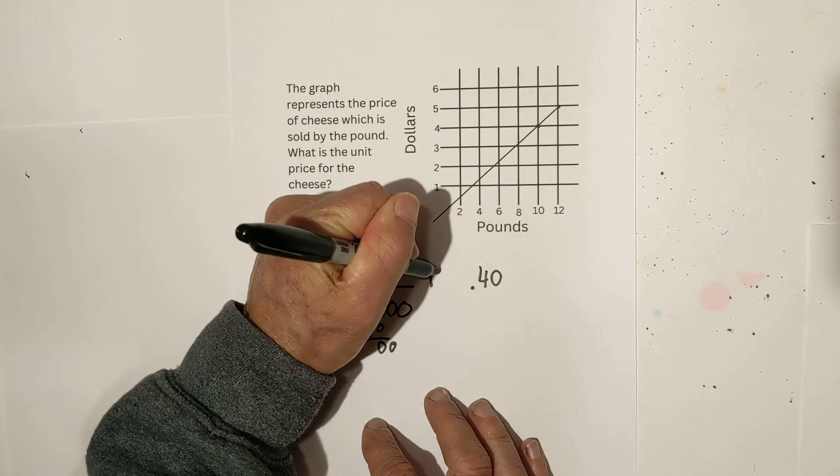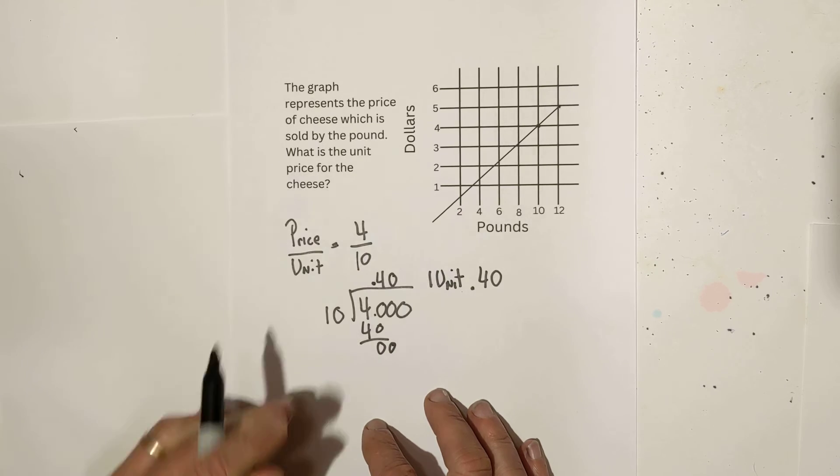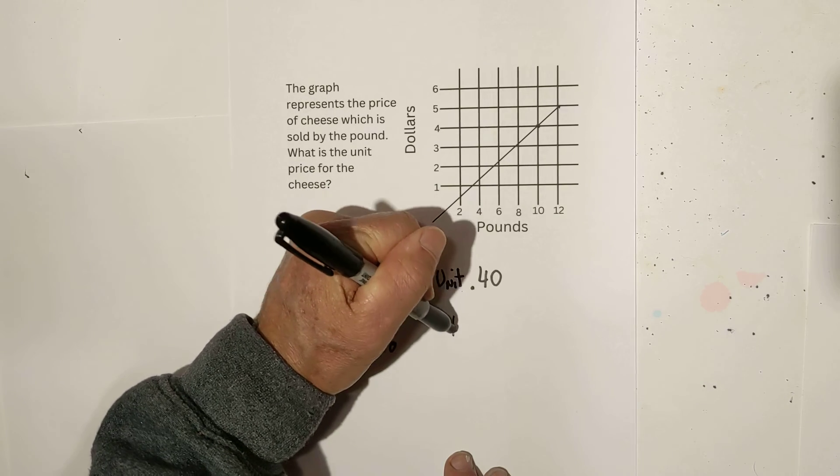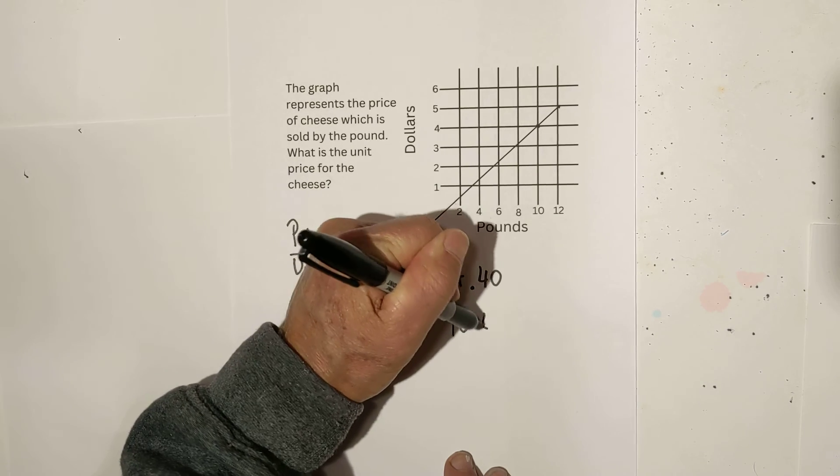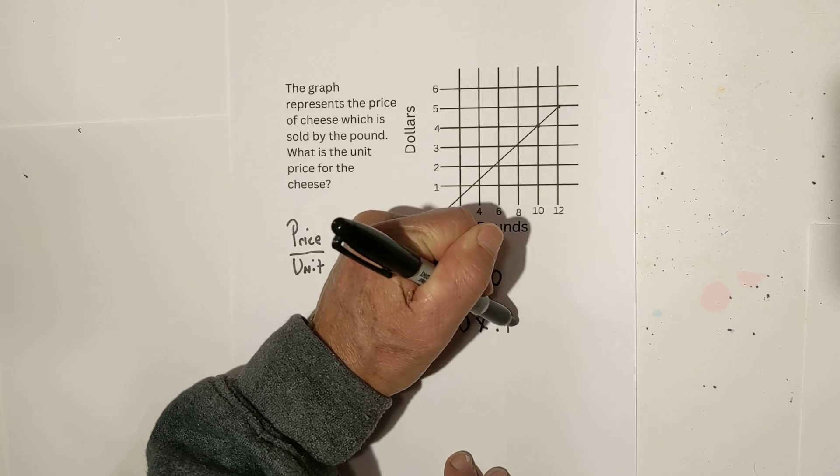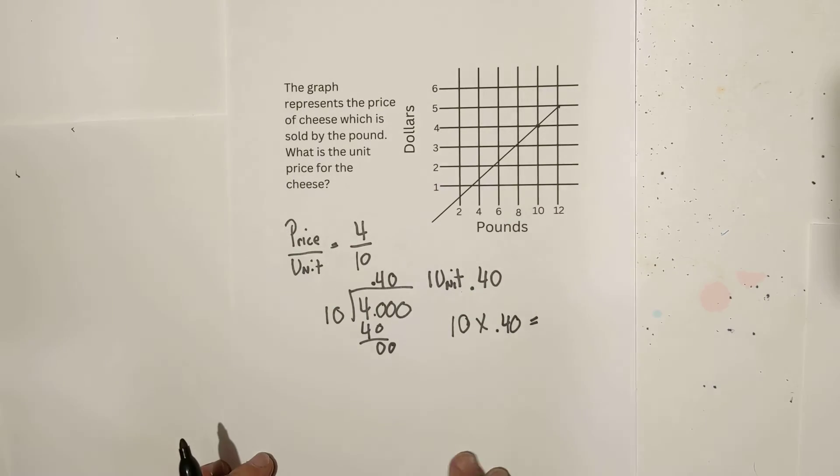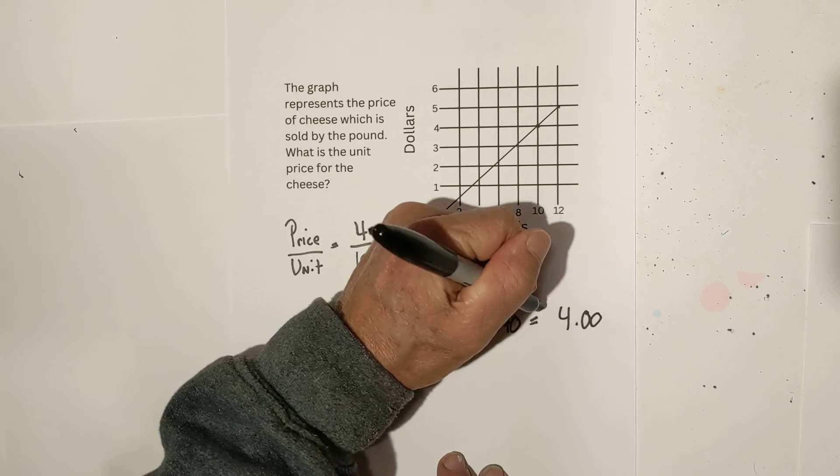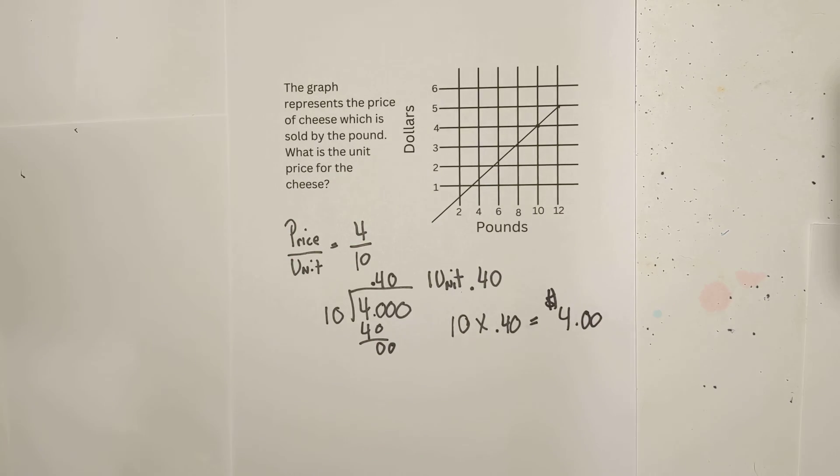One unit. So again, say I go in this time and I'm going to buy 10 pounds. 10 times 0.4, or 40 cents, and I'm going to spend $4. Hope that was helpful in figuring unit price. Thanks for watching and remember kindness multiplies kindness and be kind to someone today.